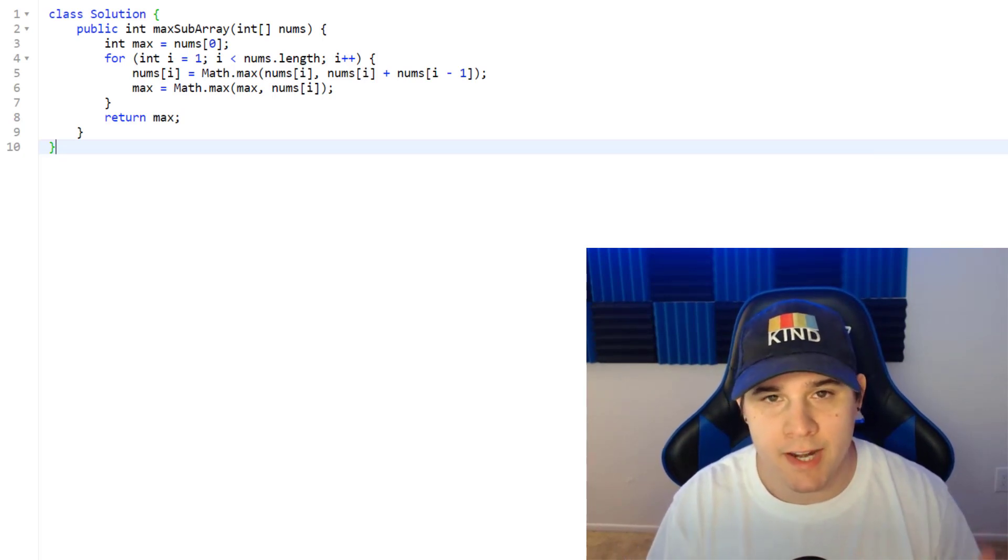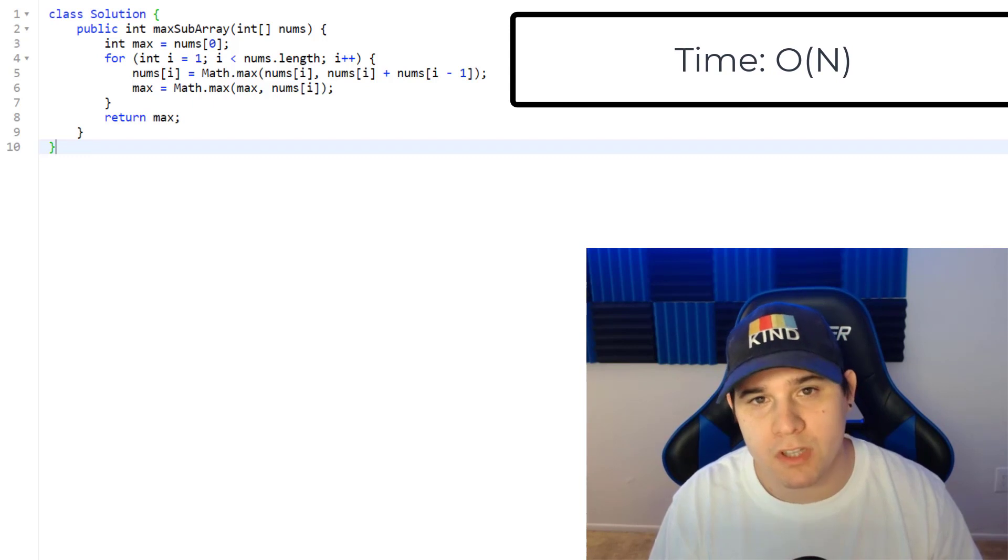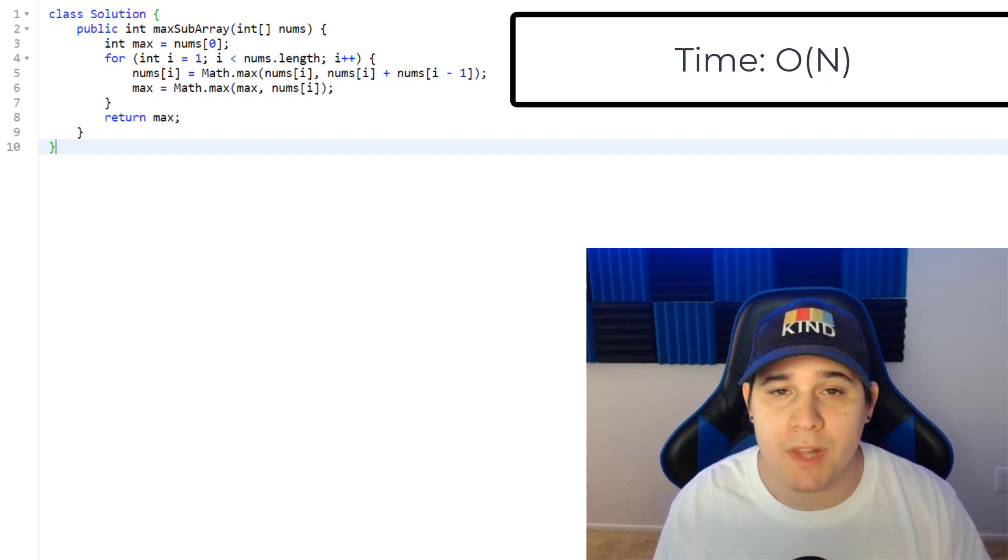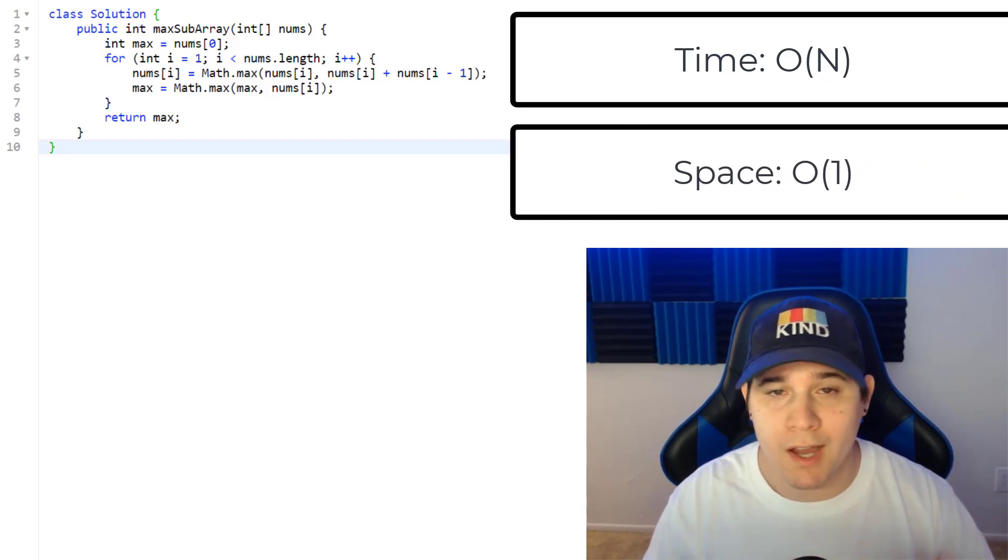So our time complexity for this dynamic programming approach is going to be linear time, specifically big O of N, where N is the number of items that we have in our nums array. As for our space complexity, it's actually constant. We're not initializing any new memory in this algorithm.